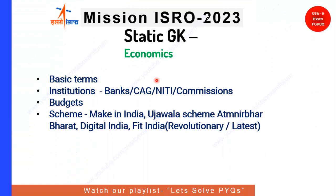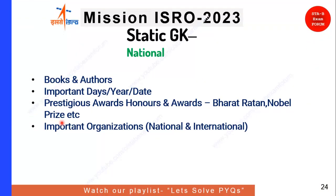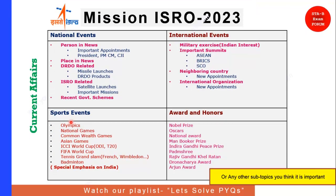For Economics, look for basic terminologies, institutions like banks, CAG, NITI Aayog, and commissions. Most importantly for economics, know the recent and important schemes from the past. For National Events, read important books, important days, and important organizations. For current affairs, this recommended table covers national events, international events, sports events, and awards and honors — note these down while preparing your current affairs. You can also include any other important topics.